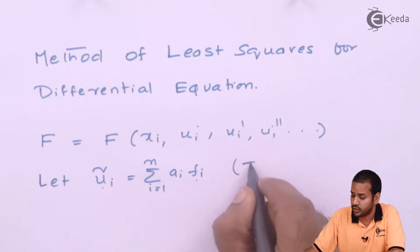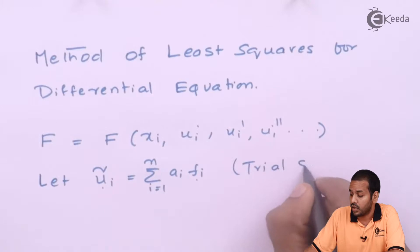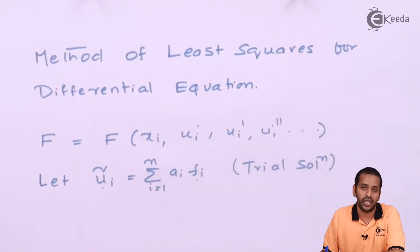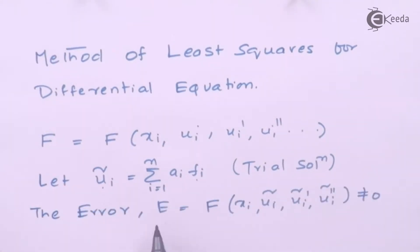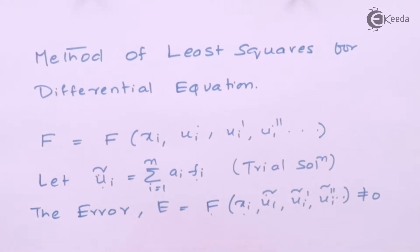Since this is an assumed trial solution, if we substitute this trial solution into our actual governing equation we will have some error. The error is given as F(x, ũ, ũ', ũ'', etc.), which is not equal to zero. So until now it is clear, even in the point collocation. The way we are going to make this error zero is different from point collocation.